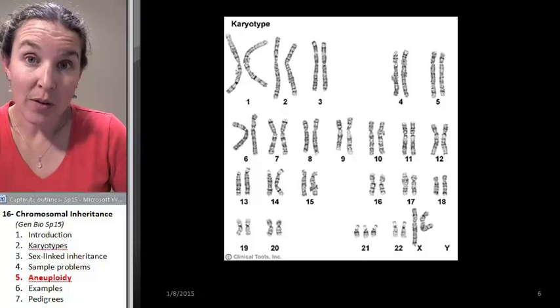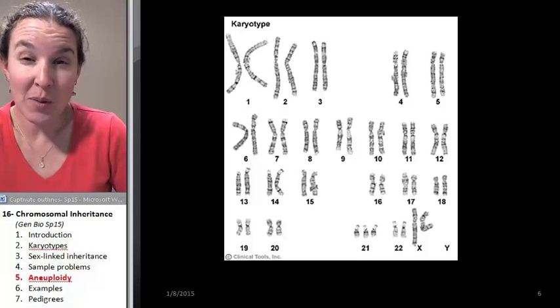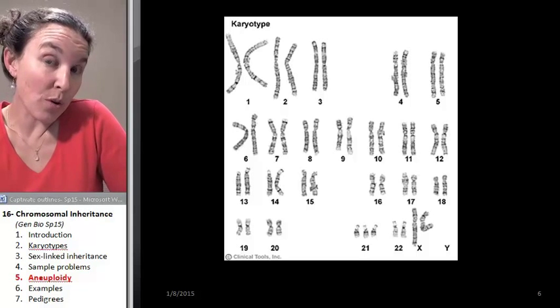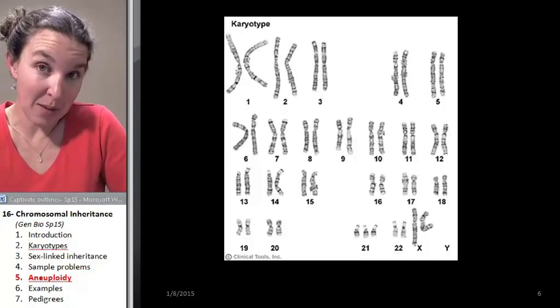You could end up with an entire chromosome that's missing from a gamete. You could end up with two chromosomes instead of one chromosome in a gamete.